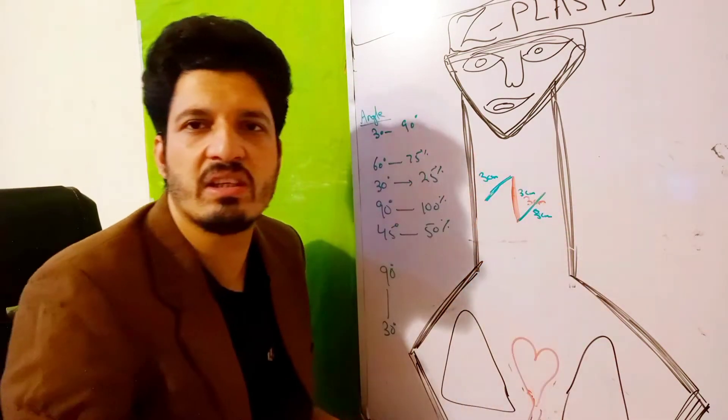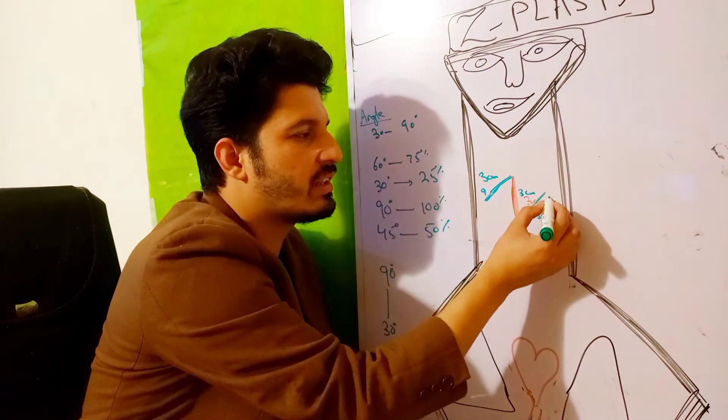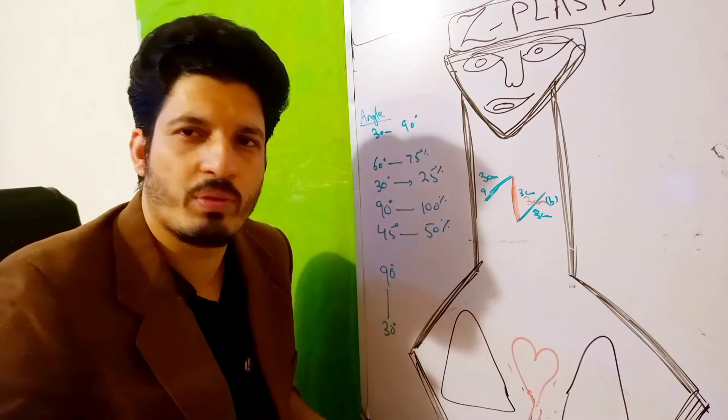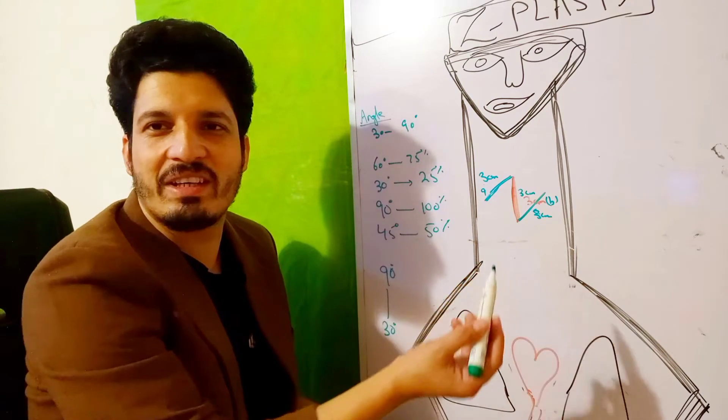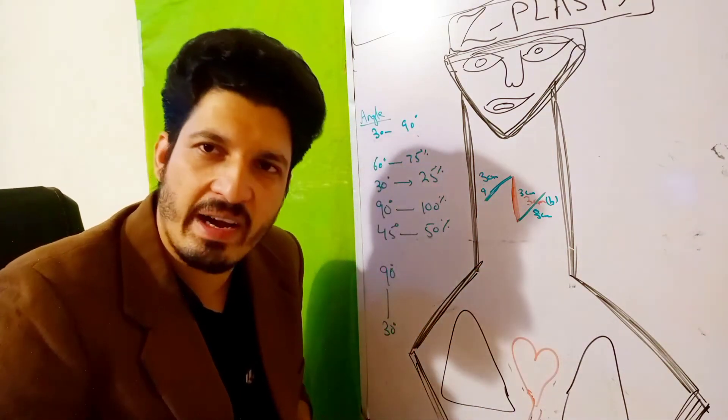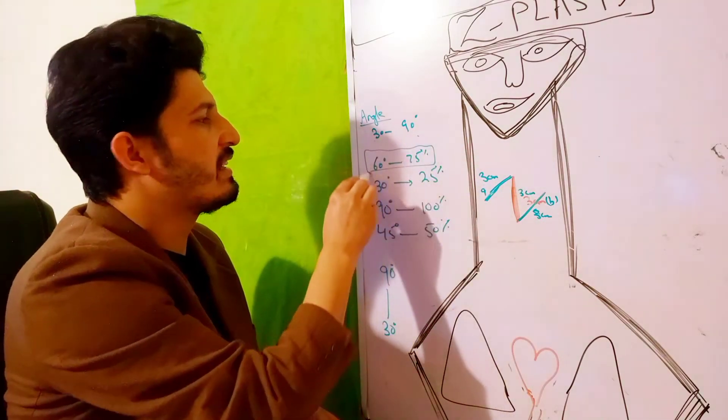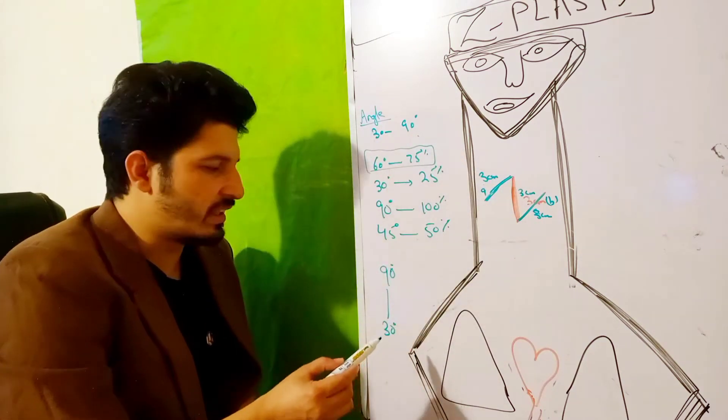We call this limb A and this limb B. What's the angle between the limbs? It varies between 30 degrees to 90 degrees, but the ideal angle is 60 degrees. This is the most appropriate angle.